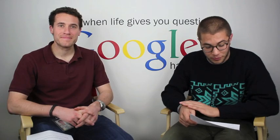Second question: why don't I have the option to pause some placements in my display campaign? There are two options for placements. There are automatic placements, which you are automatically placed on based on the targeting settings that you set up. There are also managed placements — different websites or web pages that you want to specifically show your ad on. My guess is you have a list of automatic placements and you're wondering how to make sure you don't show on some of those. Very simply, you can exclude these placements to make sure you don't show on them.